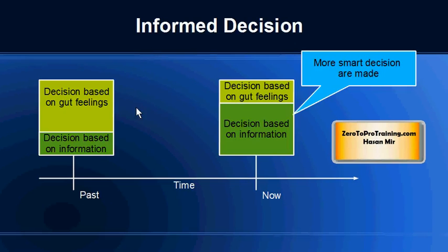In the past, most decisions were made based on gut feelings, not based on actual information. However, with the passage of time, things have gradually changed, and these days most decisions are made based on information extracted from raw data. Very few decisions are still made based on gut feelings. This information extraction is made possible by business intelligence tools.